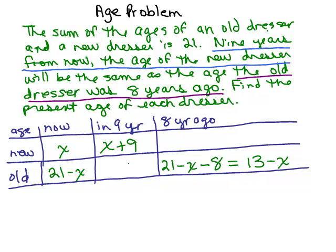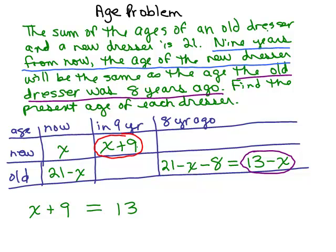Now let's read the problem again. Nine years from now, the age of the new dresser — which is X plus 9 — will be the same as the age the old dresser was eight years ago, which is 13 minus X. So our equation is: X plus 9 equals 13 minus X. That's the equation.